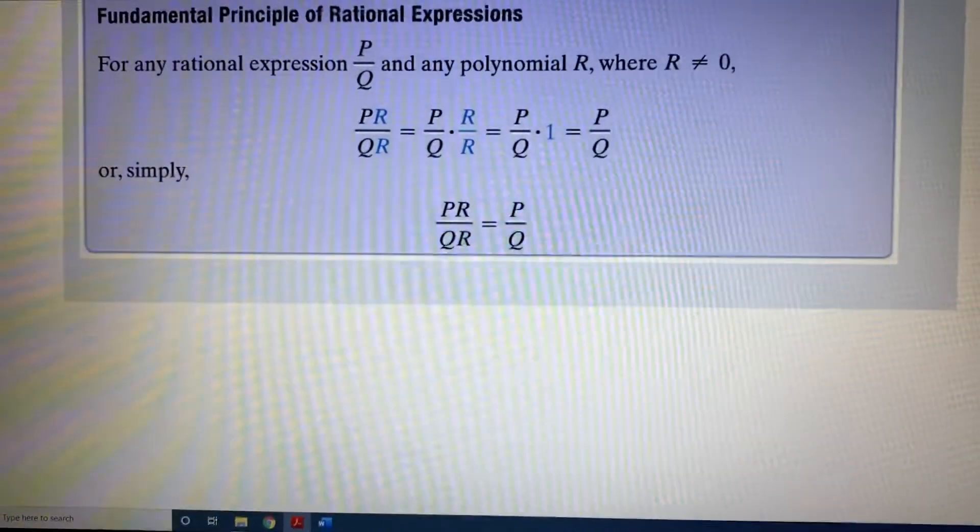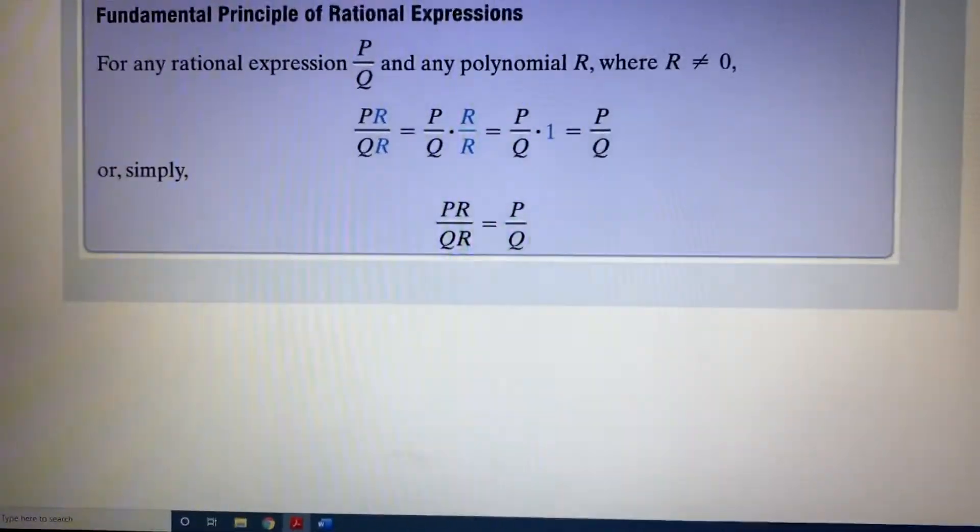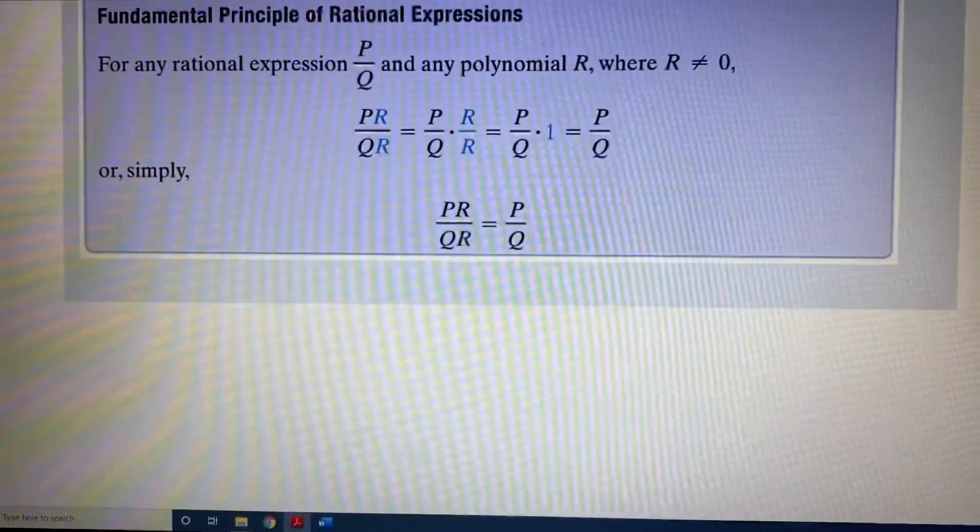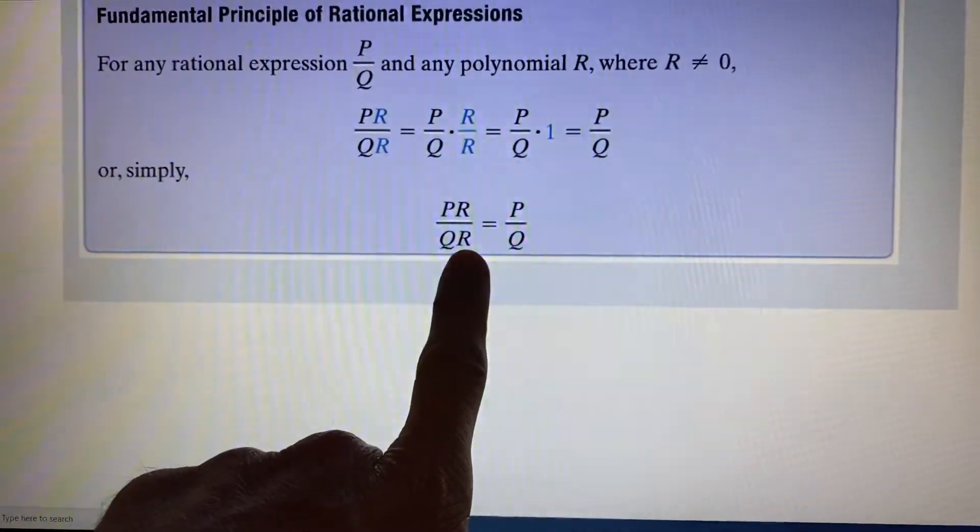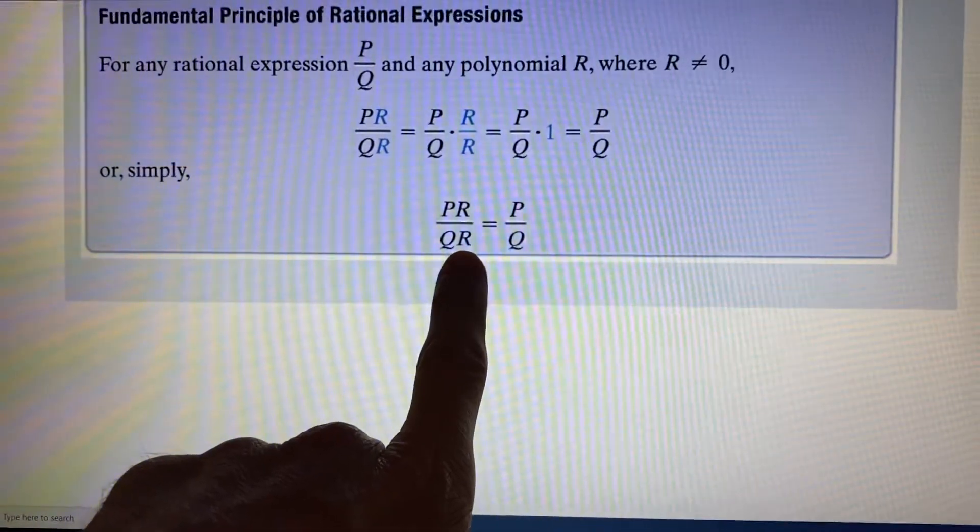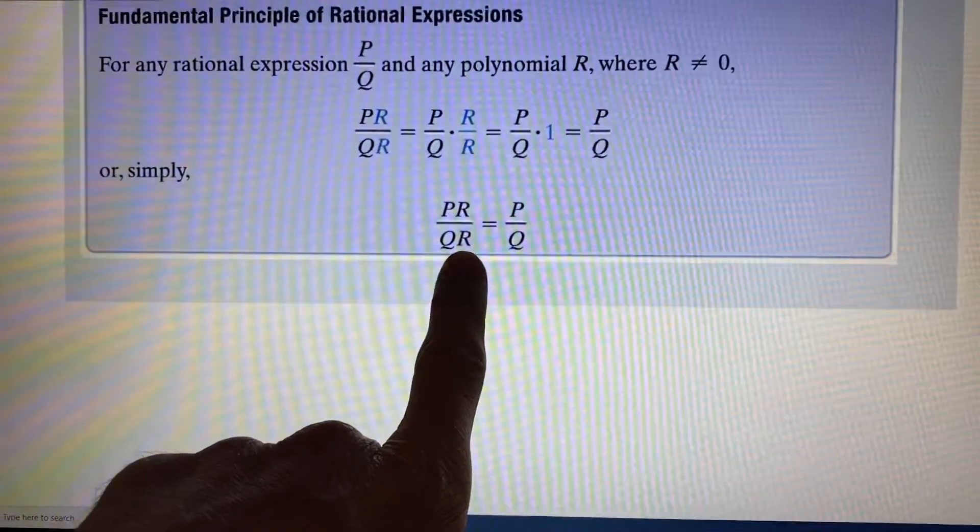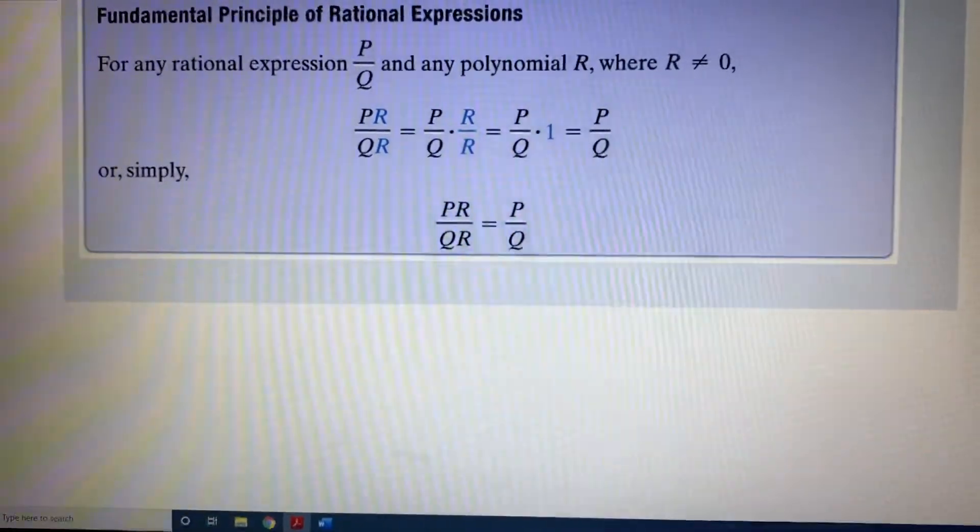This is the familiar canceling rule from algebra, but it's important to recognize that the only things that can be canceled are factors—things that are being multiplied. If we look carefully here, the R in the top and the bottom is a multiplier. The P is multiplying by the R. The Q is multiplying by the R. So keep that in mind whenever you're asking yourself, can I cancel?